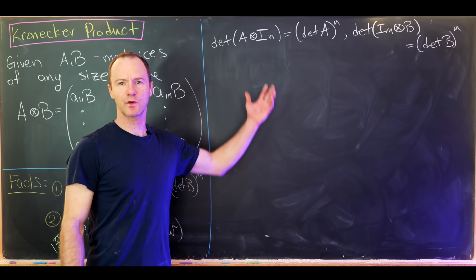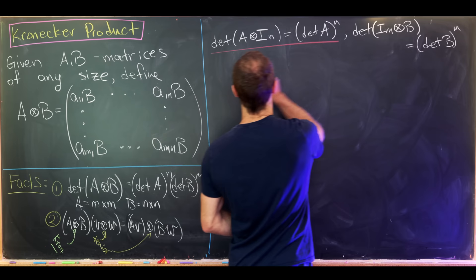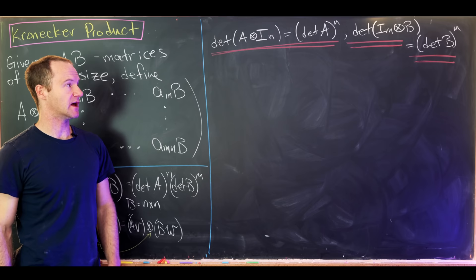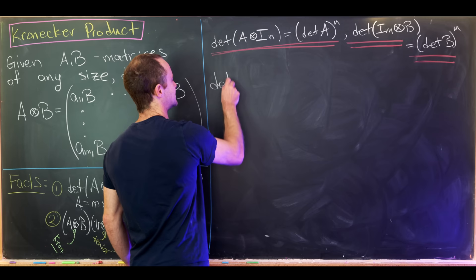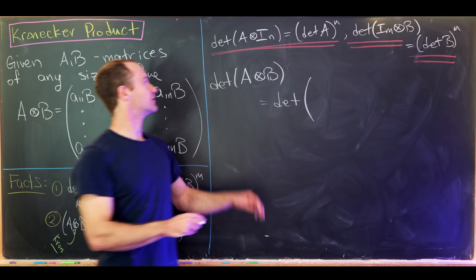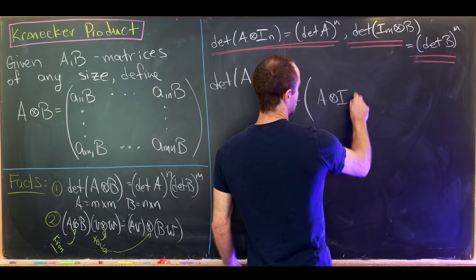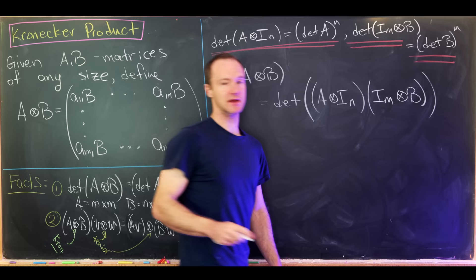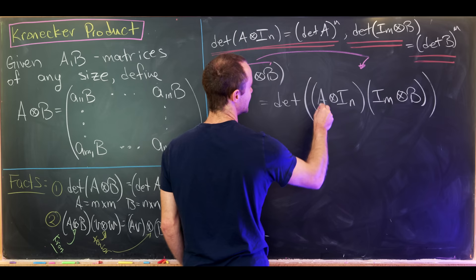On the last board we derived — or at least saw strong evidence for — these two identities. The proofs are essentially the same, being careful with indices. Now from these two identities, we're ready to finish. We take det(A⊗B) and factor the Kronecker product as follows: A⊗B = (A⊗I_n)·(I_m⊗B), where · is the ordinary matrix product. This factorization can be verified, and it's probably easier to prove working from right to left.